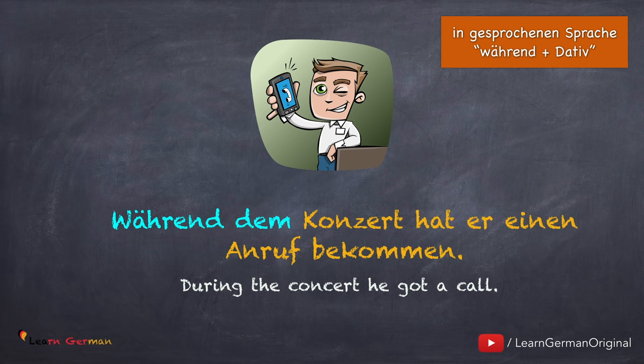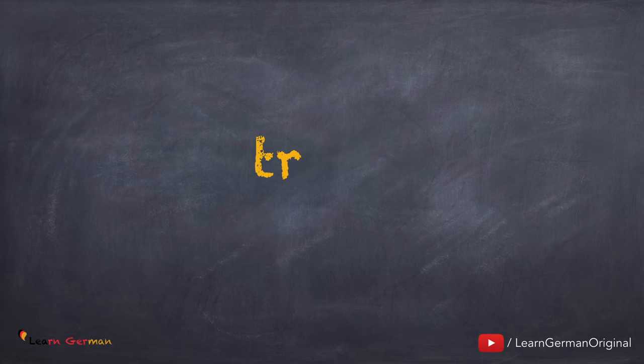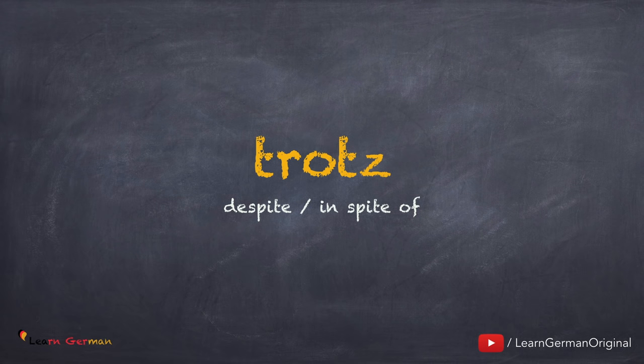Auch in der gesprochenen Sprache kann man mit 'während' Dativartikel benutzen — zum Beispiel: Während dem Konzert hat er einen Anruf bekommen. Und jetzt kommen wir zu der dritten Genitivpräposition: Trotz. Wir haben in der A2 schon gelernt, wie man 'trotzdem' als eine Konjunktion benutzt. Jetzt lernen wir, wie man 'Trotz' als eine Genitivpräposition benutzt.